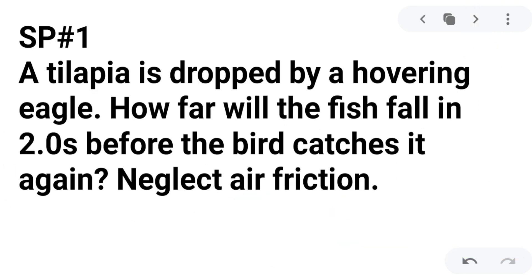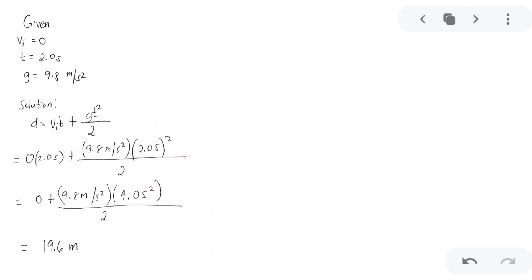A tilapia is dropped by a hovering eagle. How far will the fish fall in 2.0 seconds before the bird catches it again? We have to neglect air friction since this is a free fall. So the problem here is dropped by. So you will have a positive 9.8 meters per second squared. Let us specify the given values.